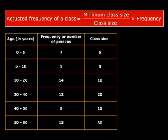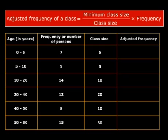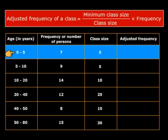Now, let me add the critical column, adjusted frequency. Get back to the formula. For the first row, 0 to 5 age group, the adjusted frequency is minimum class size which is 5 divided by the class size. In this case, that is also 5. So, 5 by 5 into frequency which is 7. So, we get our adjusted frequency as 7.